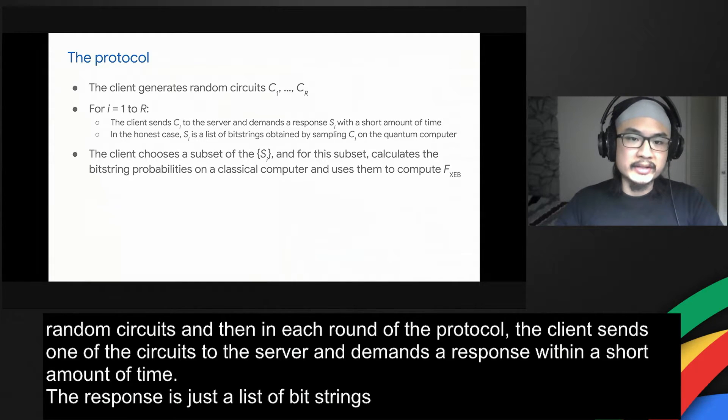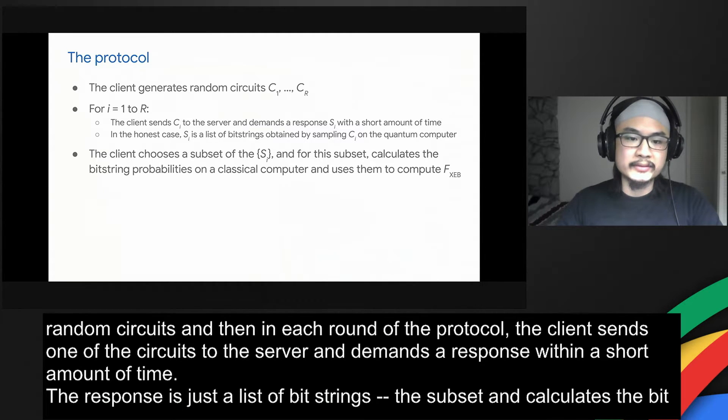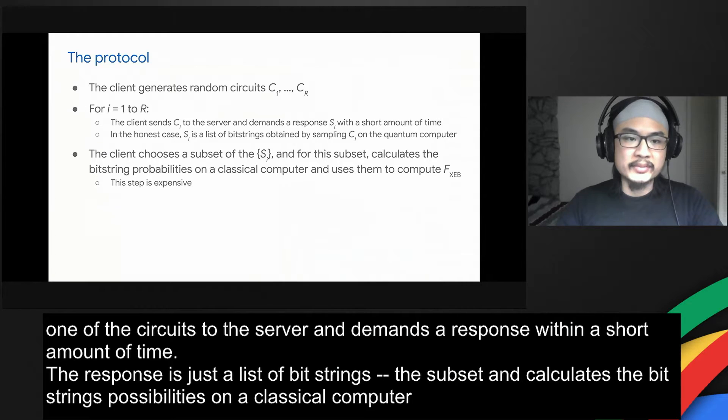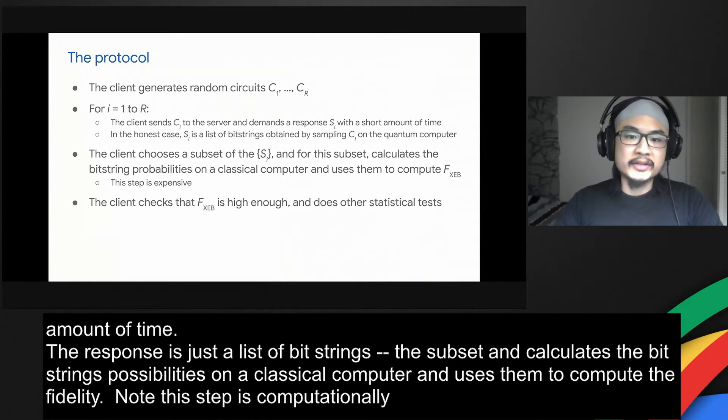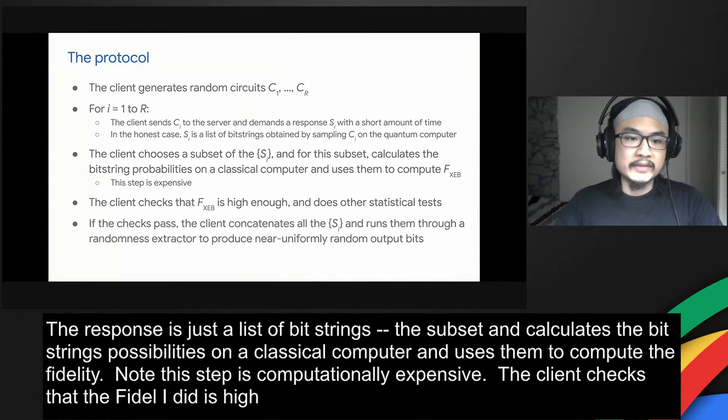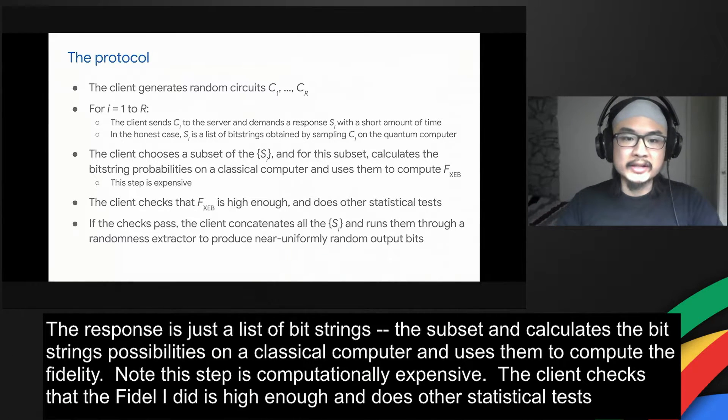Next, the client chooses a subset of the responses and calculates the bit string probabilities on the classical computer and uses them to compute the fidelity. Note that this step is computationally expensive. The client checks that the fidelity is high enough and does other statistical tests on the bit strings. If the checks pass, then the client concatenates all the bit strings and runs them through a randomness extractor, which is like a hash function, to produce near uniformly random output bits.